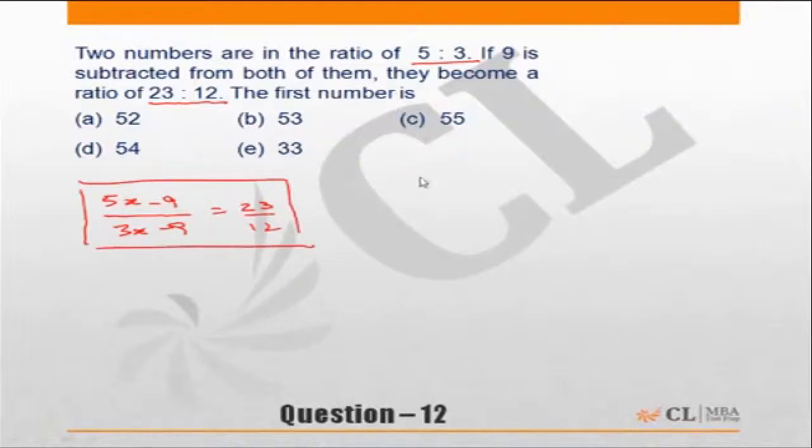The moment you say let the numbers be 5x and 3x, you mean the first number should be a multiple of 5. If the first number has to be a multiple of 5, then choice A, D, B and E which are not multiples of 5 are incorrect and the correct answer has to be choice C, 55. You really did not need to do anything else in this particular question.